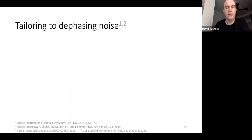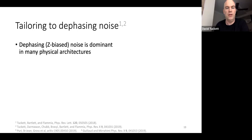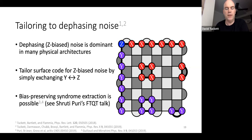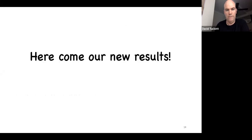Just a note on tailoring to phase noise: in many architectures, Z-biased noise is dominant. It's simple to modify the code to be resilient to Z-biased noise — just swap Y and Z — to get high thresholds for Z-biased noise. Also, it's possible to extract syndrome information in a bias-preserving way, as demonstrated with cat qubits in Shruti's talk.